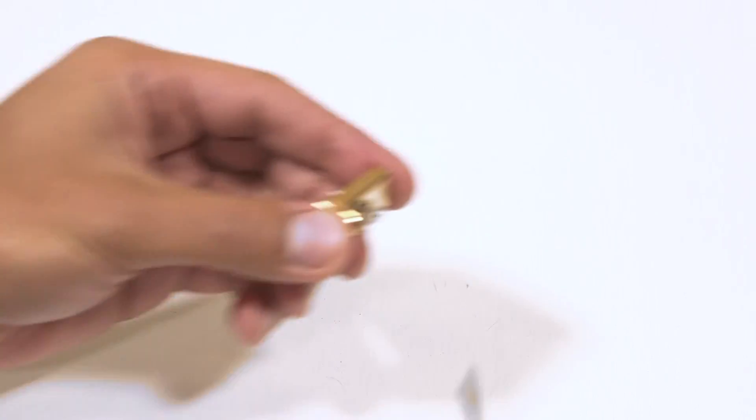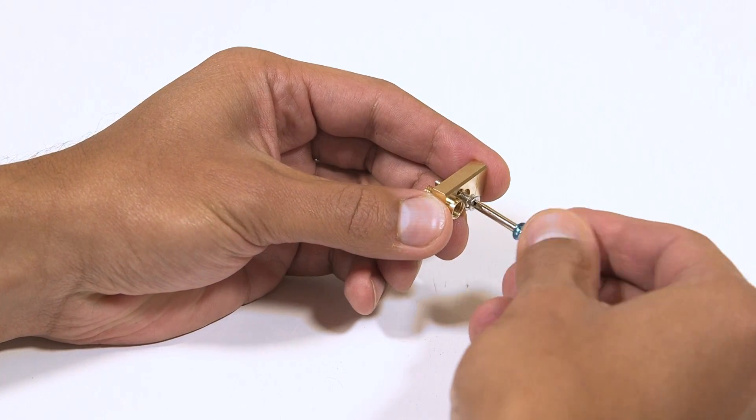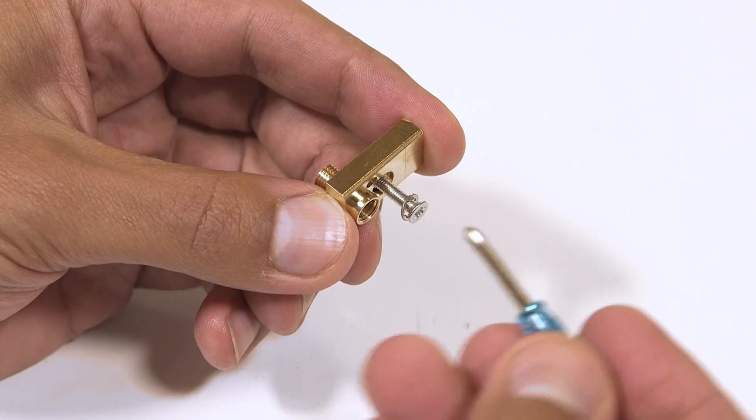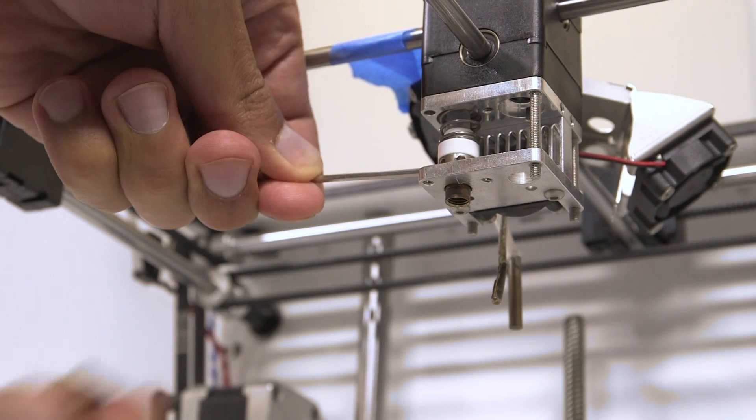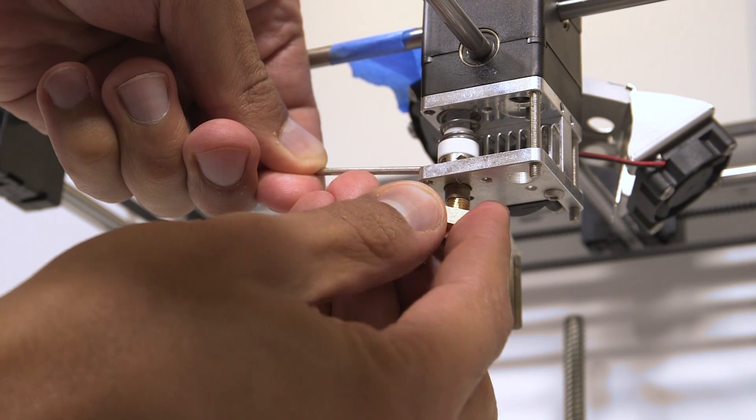With the blue screwdriver, unscrew the set screw in the Olsen Block before installation, as this makes installing the block much easier. Screw the Olsen Block into the hotend isolator.